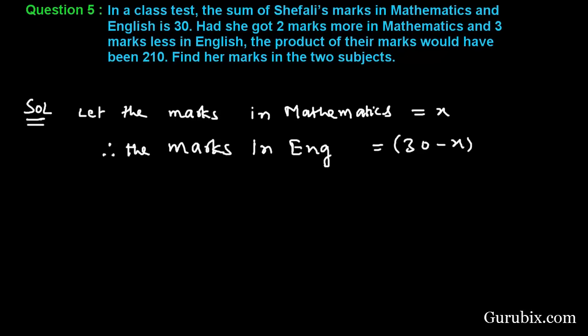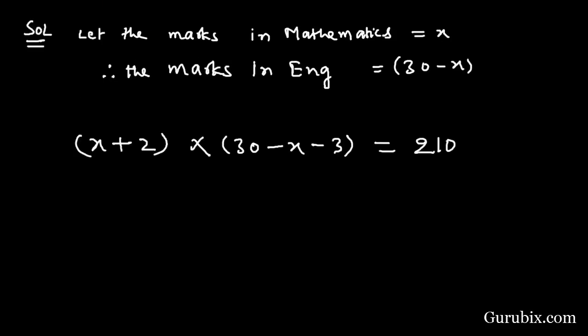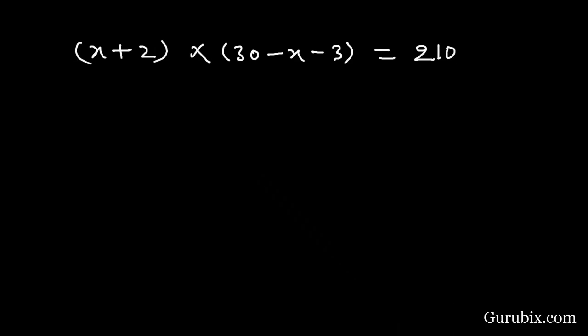And we are given in the question that if she got 2 marks more in mathematics and 3 less marks in English, then the product of these numbers is equal to 210. So this is our equation and we have to solve it for x.